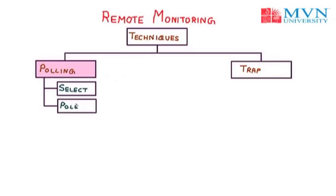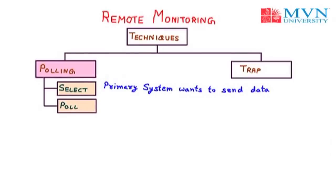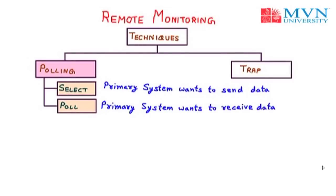Under the select function, whenever the primary system wants to send data, it tells the secondary system to get ready to receive — this is called the select function. Under the poll function, if the primary system wants to receive data, it asks the secondary system if they have anything to send — this is called the poll function. So if the primary system wants to receive data, we use the poll function, and if it wants to send data, we use the select function.